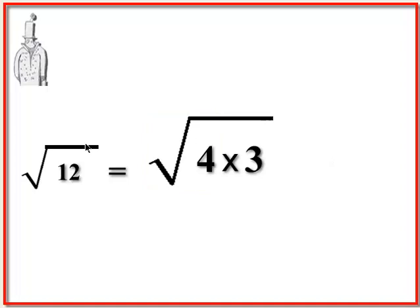We're going to rewrite 12 as the product of 4 times 3, all under the same radical. Here comes a huge rule: if you're multiplying under a radical and everything's a factor, you can break them down into their own separate radicals.